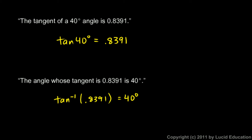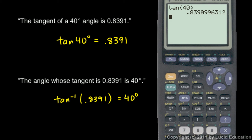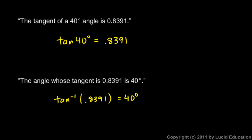So let's do that on a calculator. The inverse tangent of .8391 should be 40 degrees. On the calculator, the second function on the tangent key is the inverse tangent — hit second and tangent, type in .8391, and we get 40.000124. We didn't get exactly 40 degrees because the tangent of 40 isn't exactly .8391 — remember, we rounded. The tangent of 40 is .8390996312 with more digits beyond that. If we round to four digits and take the inverse tangent, our answer closely approximates 40 degrees.